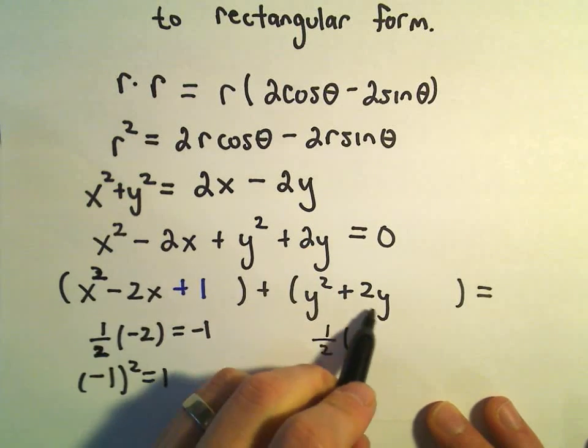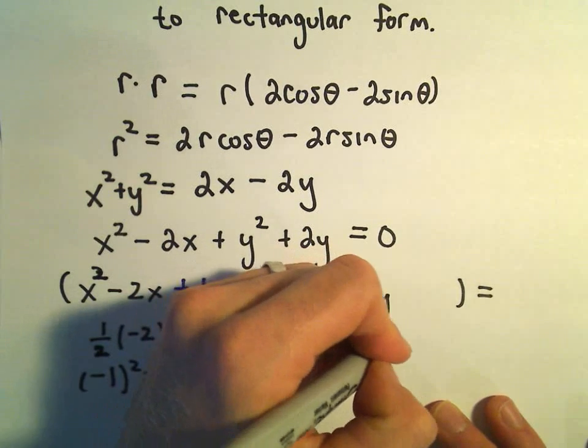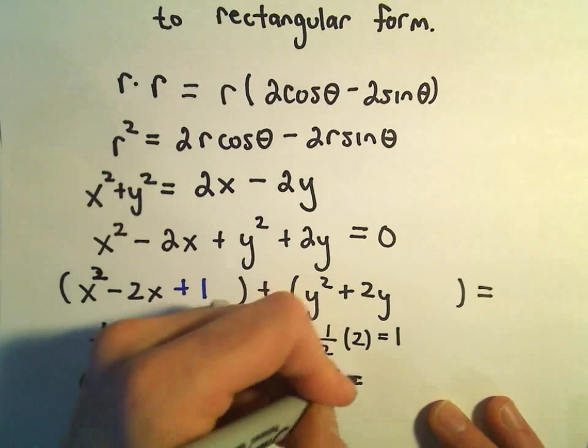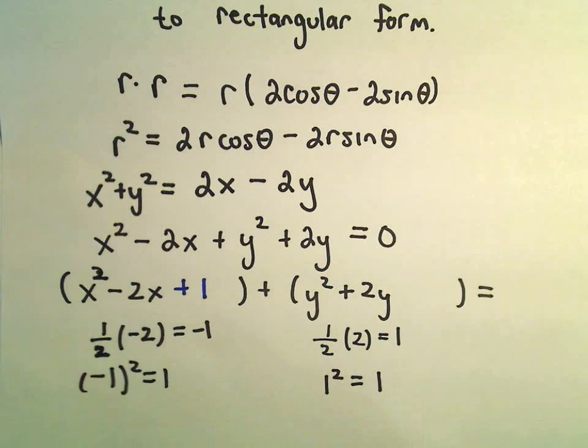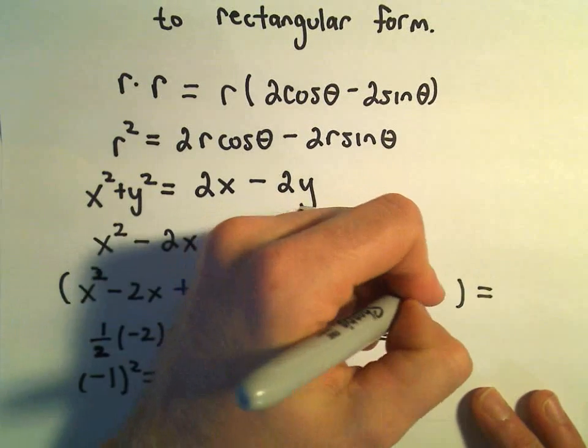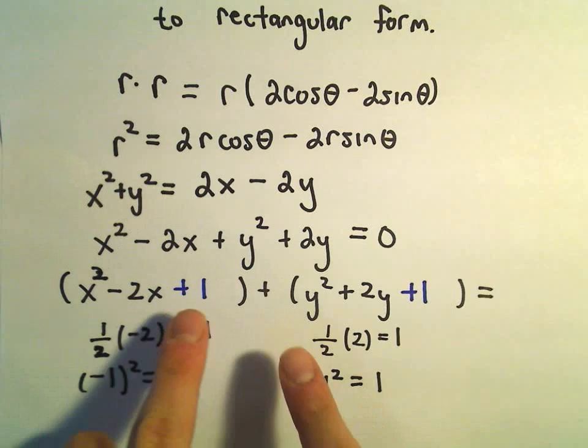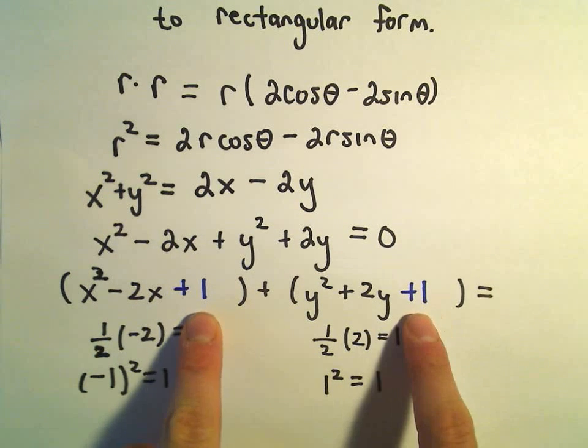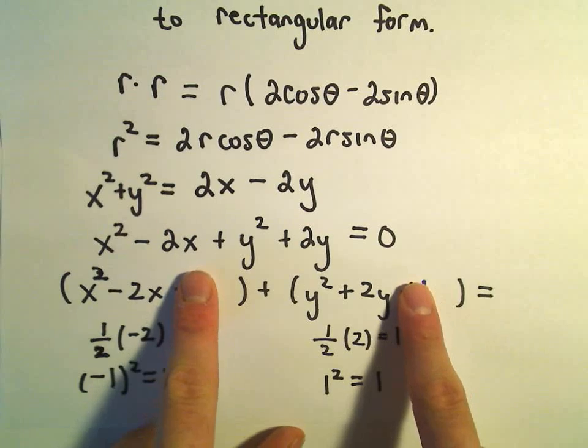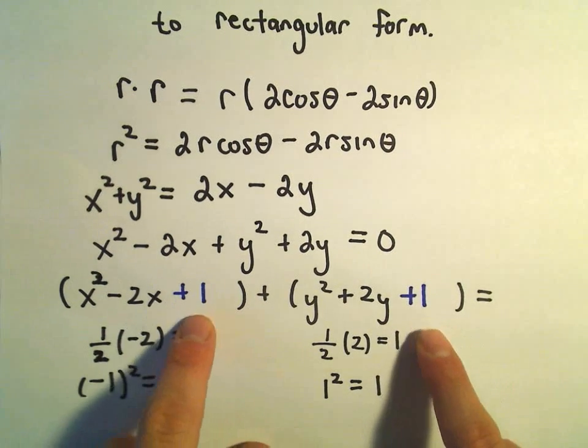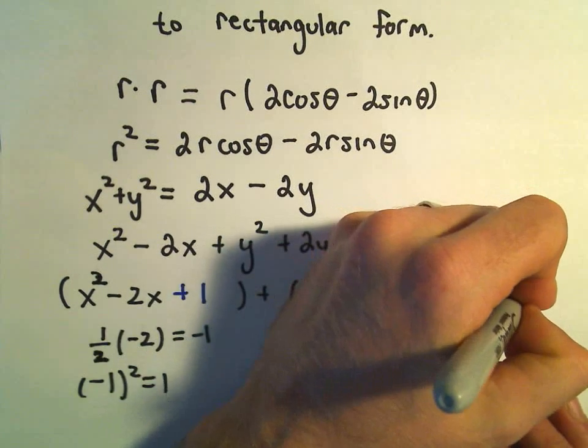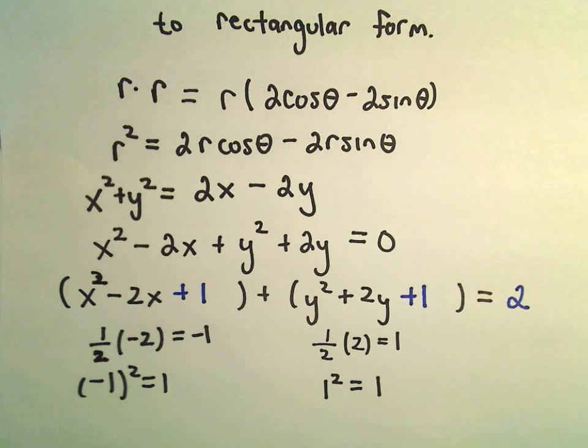If we do the same thing for the second set, we take one half of the number in front of y, which is 2. And then we take that number and we square it. So again, we'll get another plus 1. If you imagine undoing the parentheses on the left, there would be a plus 1 and a plus 1 that hadn't been there previously. So really, we've added 2 to the left side, which means we have to add 2 to the right side as well.